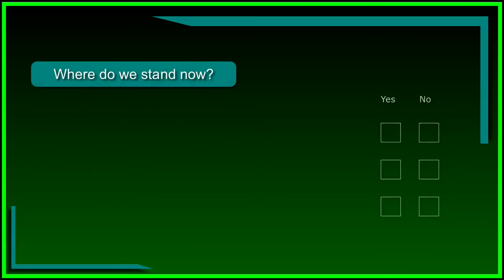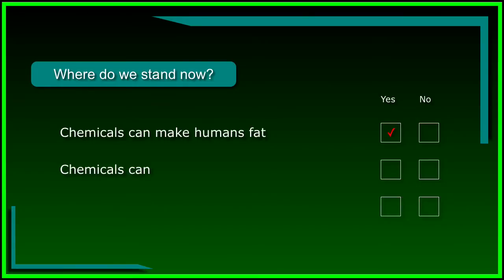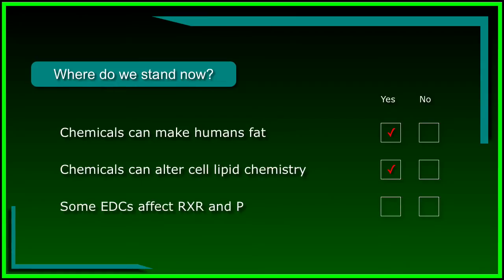Given what we have found so far, where do we stand? We have evidence that EDCs can make humans fat, evidence that EDCs can make cells in a petri dish become fat cells, and evidence that some EDCs work on RXR and PPAR gamma. Where does that leave us? One question that comes up is this: is there evidence that endocrine-disrupting chemicals affect the obesity of living mammals? There is.